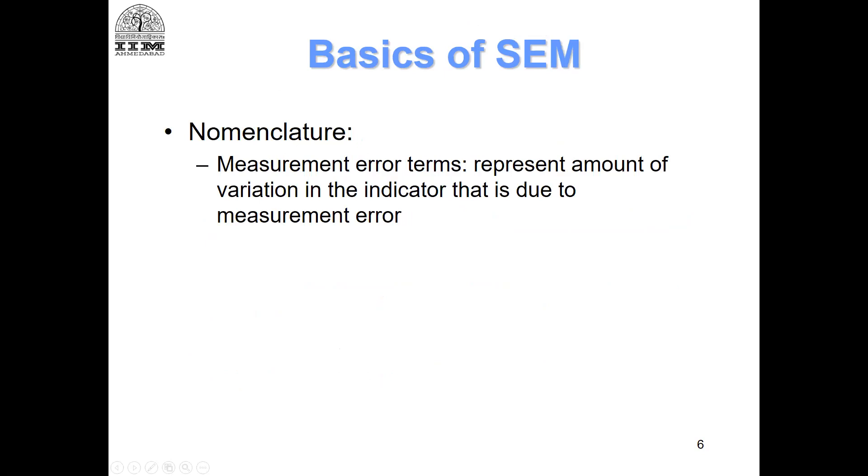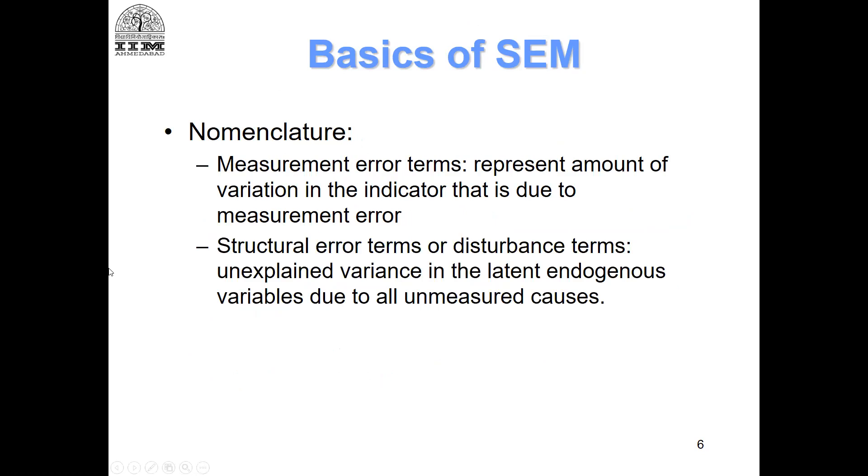And then there are measurement errors. We know this now - measurement errors are the errors associated with the items. Whenever we model reflective indicators, we will always have a measurement error associated with the item. Structural errors, by the example that we looked at, F1 causes F2, so the unexplained variance of F2 you can understand it analogous to the error of regression or the regression residual. In SEM terminology, they are called structural errors or disturbance. Covariances is basically a measure of how much the two variables co-vary or are associated with each other.